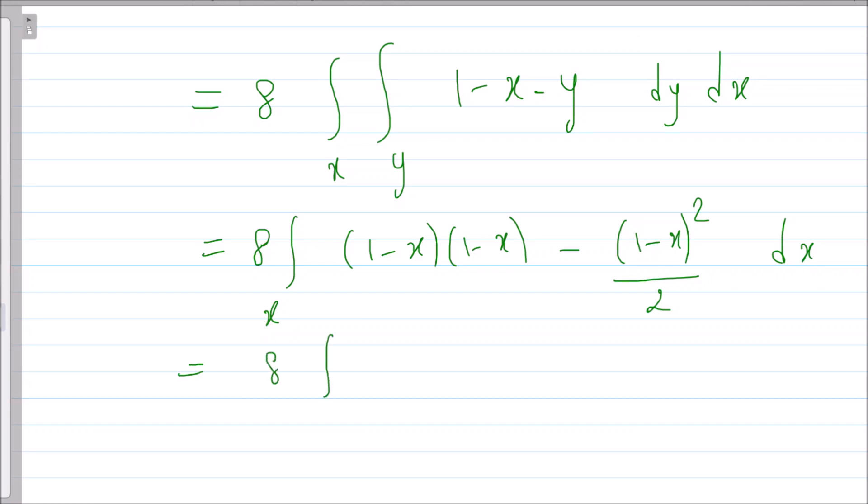So this is 8 integration 1 minus x squared minus, so this is 1 by 2, 1 minus x squared dx. You can check the calculation. If you find it's incorrect, you can simply let me know. So this is 4 times 1 minus I think again x squared by 2, so 1 plus 1 by 3. So this comes out to be 4 by 3, so this is 1.33 something.